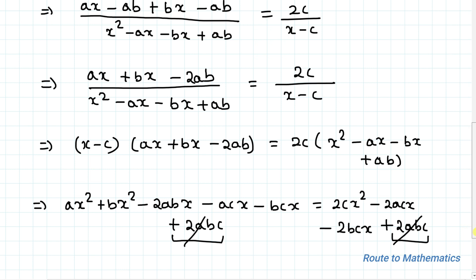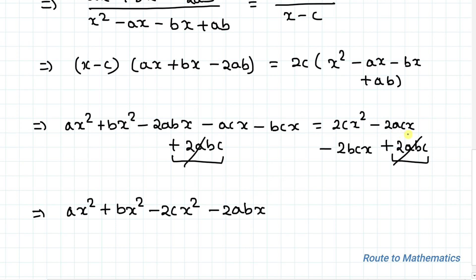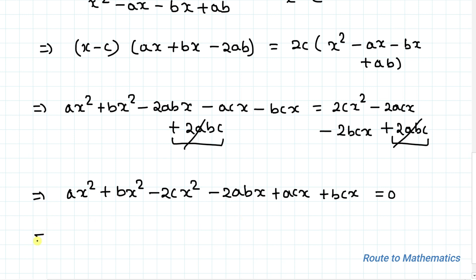Taking all terms to the left hand side: ax² + bx² − 2cx² − 2abx − acx + 2acx − bcx + 2bcx = 0. Simplifying the x terms: −acx + 2acx gives +acx, and −bcx + 2bcx gives +bcx, so we have ax² + bx² − 2cx² − 2abx + acx + bcx = 0.